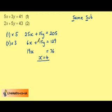Substitute back into one of the original equations. We get 5 times 4 plus 3Y is equal to 41, so 20 plus 3Y is equal to 41.